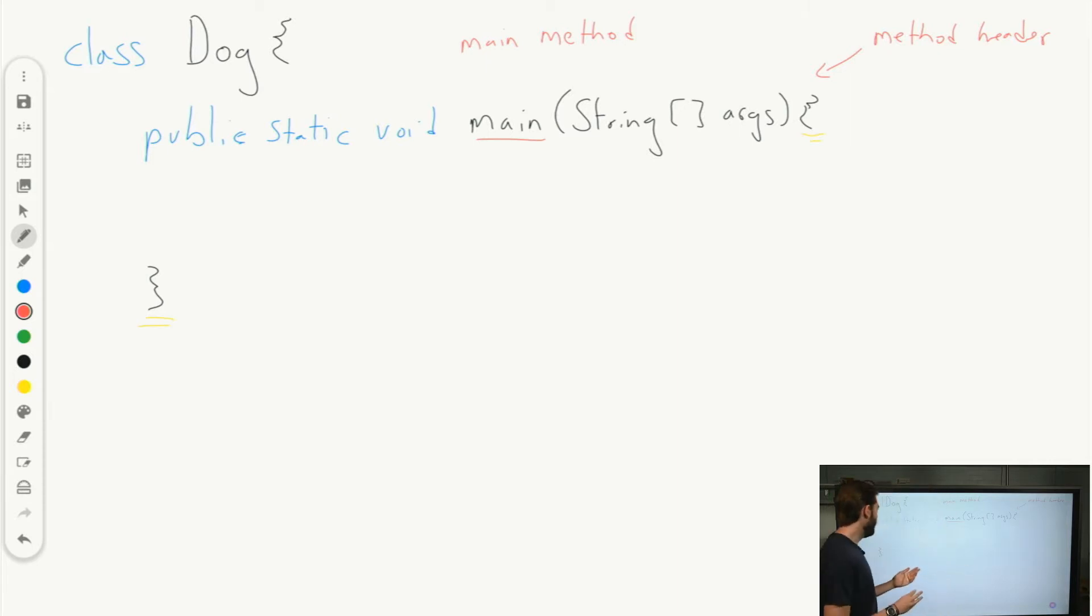And every Java program must start with a main method that has this particular header. And this is called a method header. So this particular method header is for the main method. And we've used other methods so far in this class. We've used substring, we've used .equals, we've used the square root and other methods as well. So let's go ahead and talk about how we can create our own method. So I've created this class dog. And maybe one of the things that I want my dog class to be able to do is I want my dog to be able to bark.